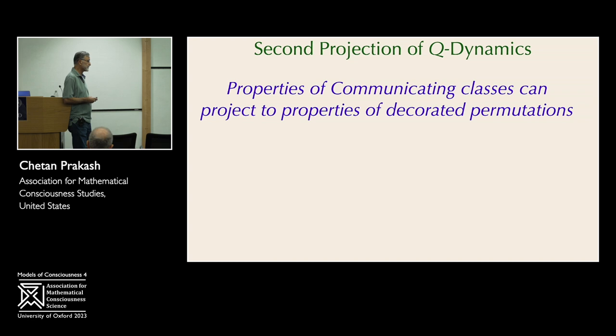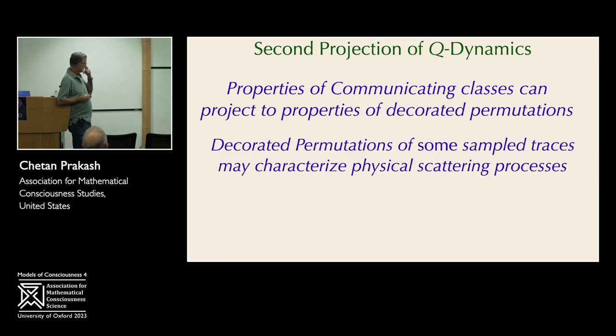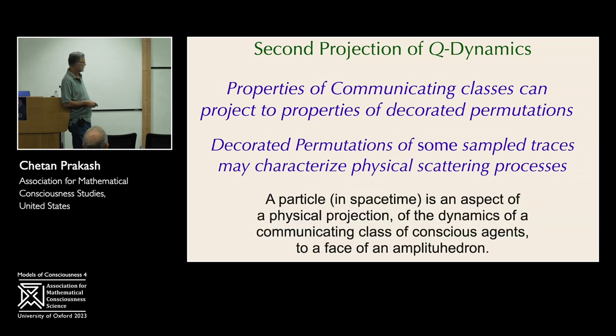So now having discovered that decorated permutations describe your traced and sampled chains, you can recognize that certain properties of communicating classes can project to properties of decorated permutations. And the fact is, as I said right at the beginning, these decorated permutations may characterize physical scattering processes. So a particle in space-time is an aspect of a physical projection. That's our proposal. And it's an aspect of the dynamics of a communicating class of conscious agents to a particular face of an amplituhedron. So you can describe scattering processes by means of this qualia dynamics.